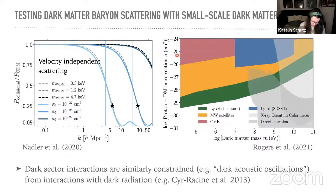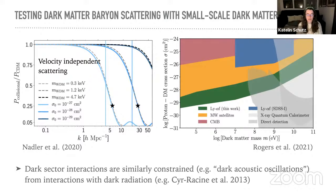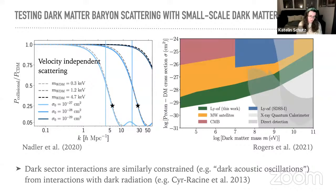Here's what the constraint looks like: the log of the dark matter cross section in centimeters squared as a function of the log of the dark matter mass. These constraints are applicable over an extremely broad range of dark matter masses and can be complementary to direct detection probes. There's a similar constraint from dark matter self-interactions — if you have really strong dark sector interactions, dark forces, or dark radiation, the dark matter interacting with dark force carriers gives dark acoustic oscillations, which are similarly constrained.